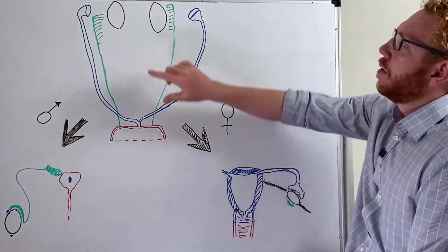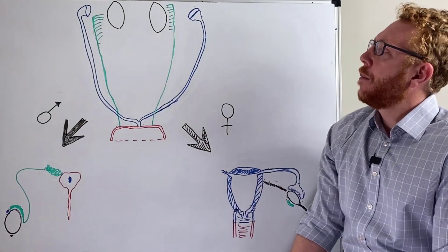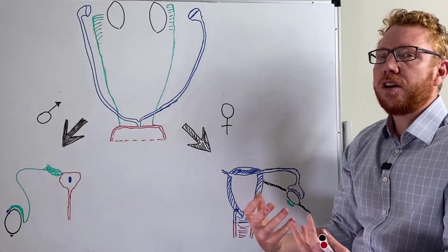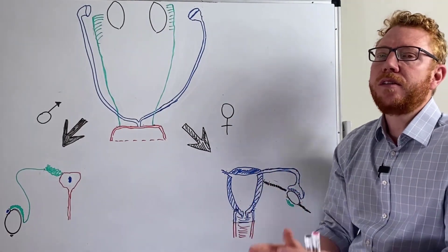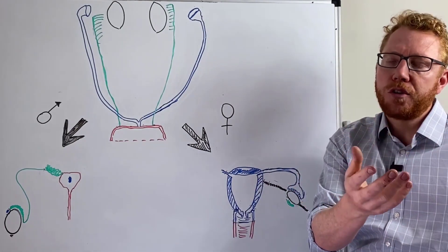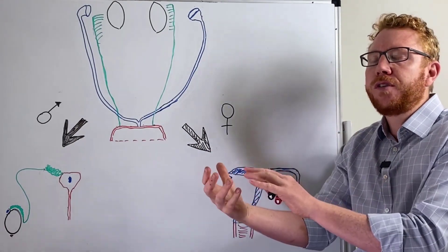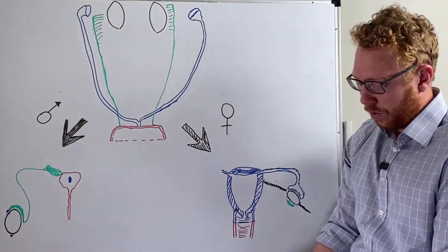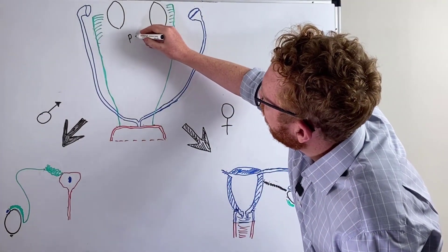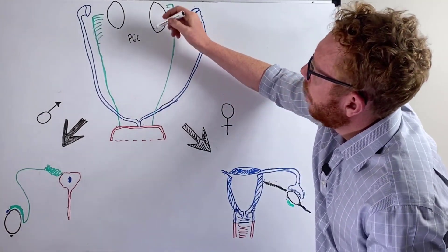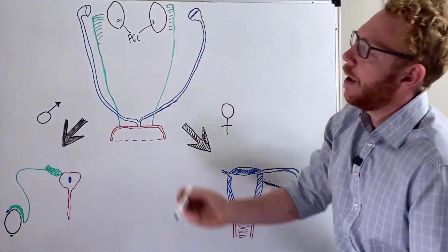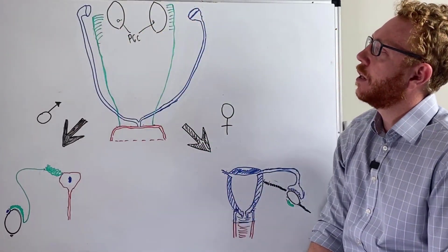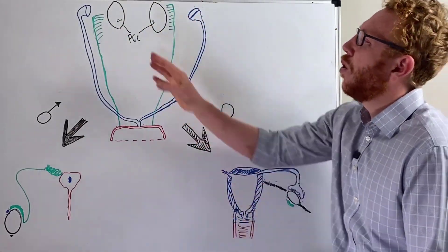At four weeks, starting with the gonads, they are still undifferentiated and sex has not been determined. The germinal cells — which are either going to become spermatogonia to produce sperm, or oogonia to produce eggs — have to migrate into these blocks of tissue. The cells that do this are called primordial germ cells. They migrate into this group of tissues at about four weeks, coming from the yolk sac, and integrate into that connective tissue or somatic tissue.